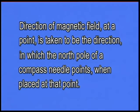Magnetic field is a vector quantity which has both magnitude and direction. So how do we find the direction of magnetic field? The direction of magnetic field at a point is taken to be the direction in which the north pole of a compass needle points when placed at that point. So let us try and find the direction of magnetic field lines of this magnet using compass needles.